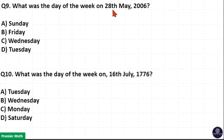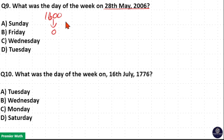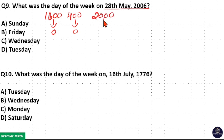What was the day of the week on 28th May 2006? Up to 1600 years there are zero odd days, and in 400 years there are zero odd days, which means you can directly write: up to 2000 years there are zero odd days.